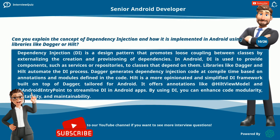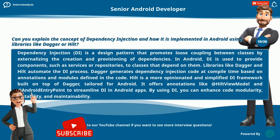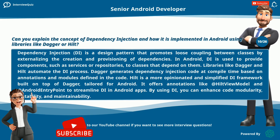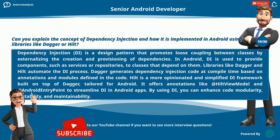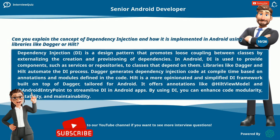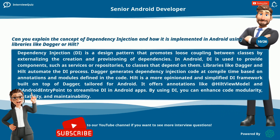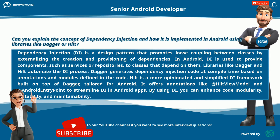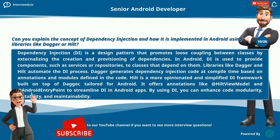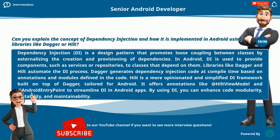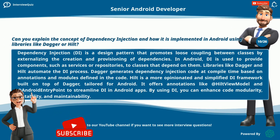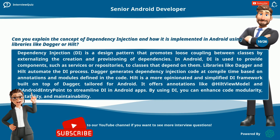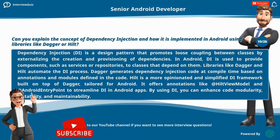Can you explain the concept of dependency injection and how it is implemented in Android using libraries like Dagger or Hilt? Dependency injection (DI) is a design pattern that promotes loose coupling between classes by externalizing the creation and provisioning of dependencies. In Android, DI is used to provide components such as services or repositories to classes that depend on them. Dagger generates dependency injection code at compile time based on annotations and modules. Hilt is a more opinionated and simplified DI framework built on top of Dagger, tailored for Android, offering annotations like @HiltViewModel and @AndroidEntryPoint to streamline DI. By using DI, you can enhance code modularity, testability, and maintainability.